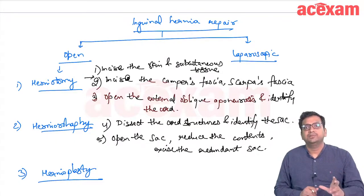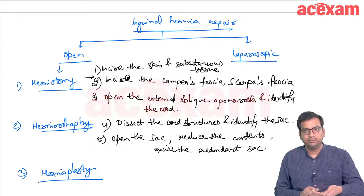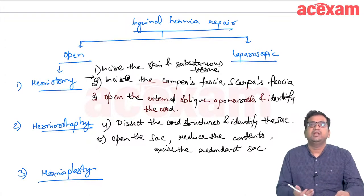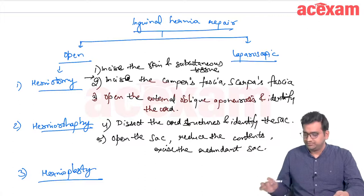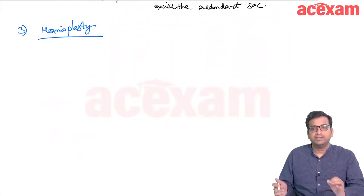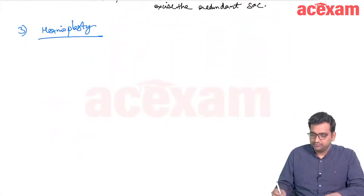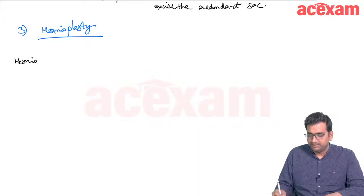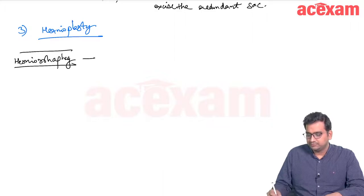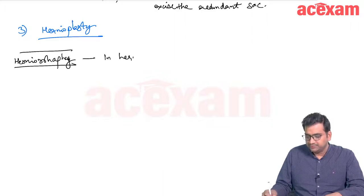After herniotomy in adult patients, we have two options: repair the inguinal floor with sutures (herniorrhaphy) or place a mesh (hernioplasty). The hernioraphy procedures include Bassini's repair, Shouldice's repair, and modified Shouldice's repair.